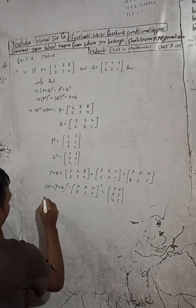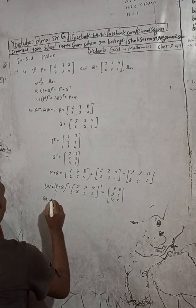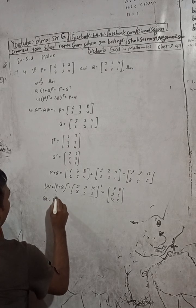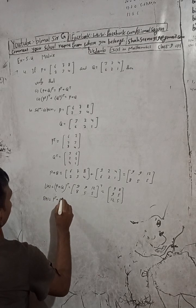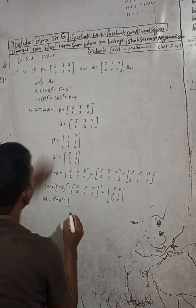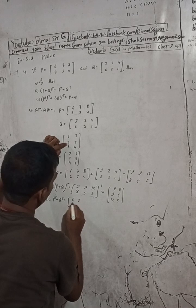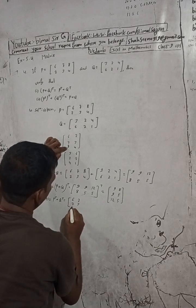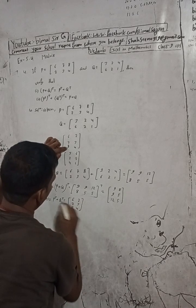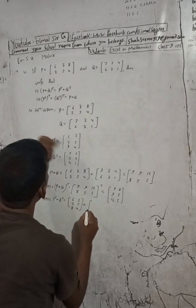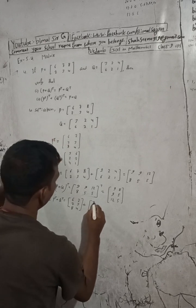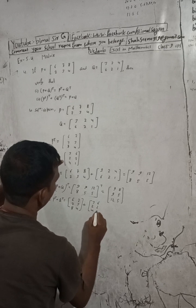Now for the RHS: P transpose plus Q transpose. P transpose is [6 2 / 7 3 / 8 4] and Q transpose is [3 6 / 2 2 / 4 1].